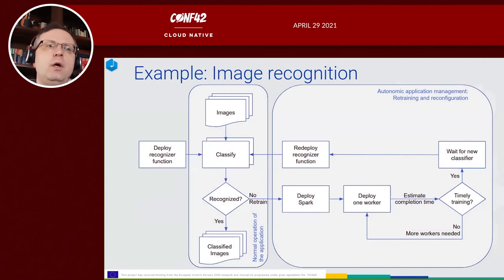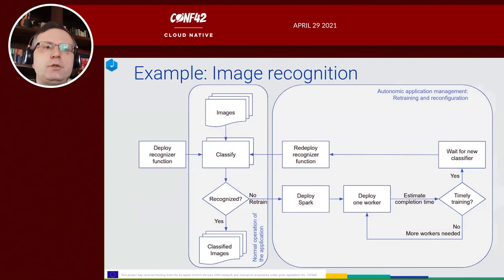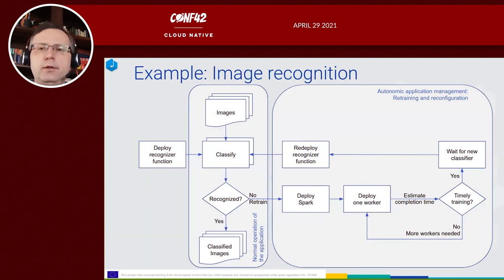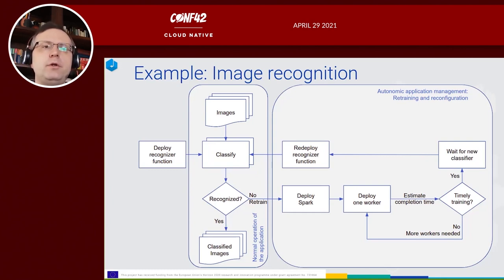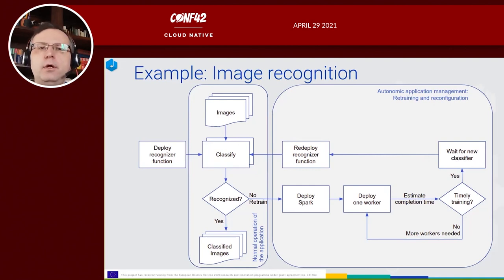Today I want to show two examples of use case applications. The first application is image recognition on the fly. Images are provided by special augmented reality glasses directly connected to the cloud. We use serverless functions that classify images almost in near real time. Melodic decides how many instances should be running at any given moment. The second training part is deployed using the Spark big data framework, also managed by Melodic, which decides how many workers should be used.